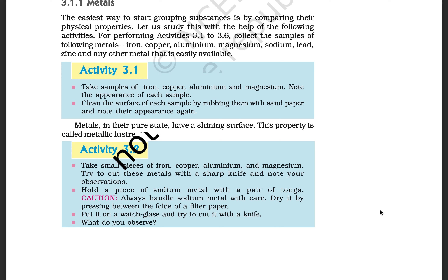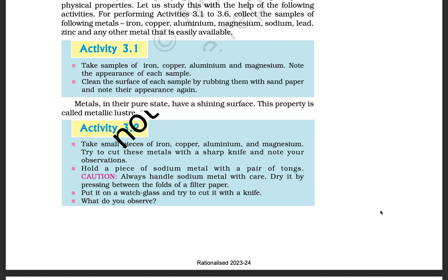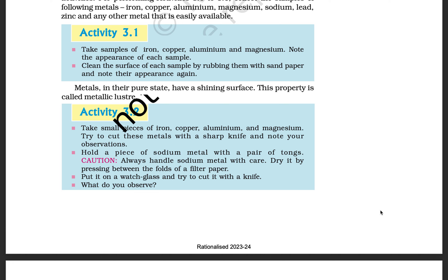Activity 3.2: Take some pieces of iron, copper, aluminium, and magnesium. Try to cut this metal with a sharp knife and note your observations. Hold a piece of sodium metal with a pair of tongs. Caution: handle sodium metal with care — dry it by pressing between folds of filter paper, put it on a watch glass and try to cut it with a knife. Observe what changes happen in the metals.